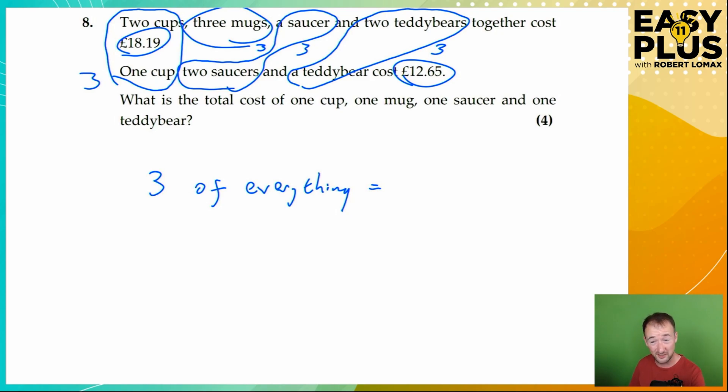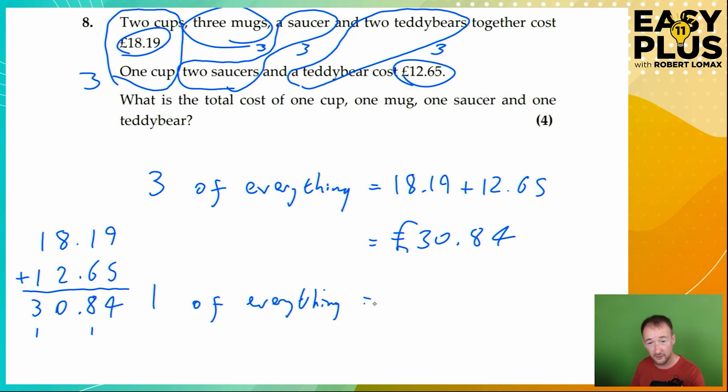So we just need to add those together. And we have £30.84. And if three of everything costs £30.84, then of course, one of everything is going to equal a third as much.